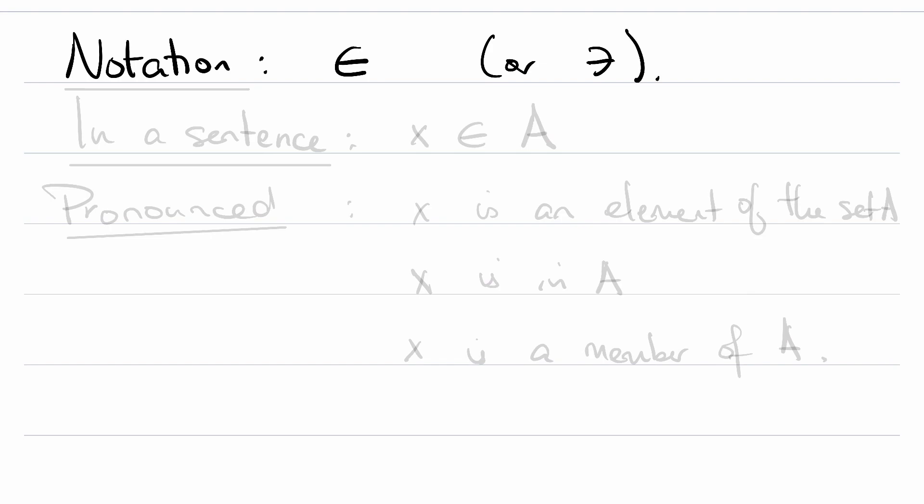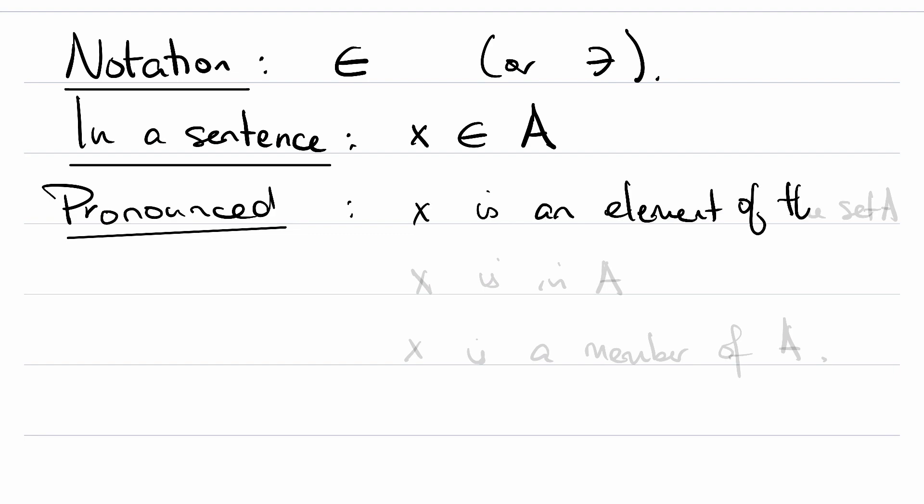So here's notation. In a mathematical sentence, you might write x, this symbol, A, and this is how you pronounce it: x is an element of the set A, or x is in A, or x is a member of A.